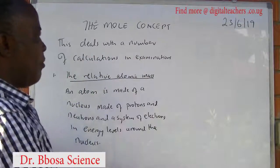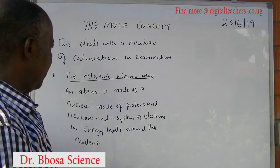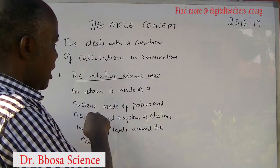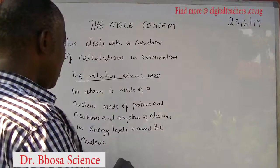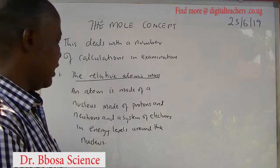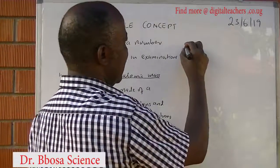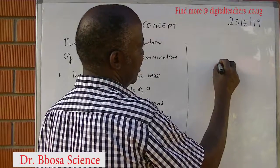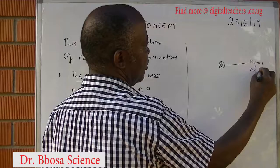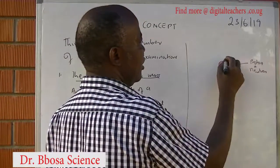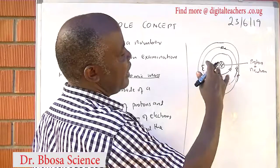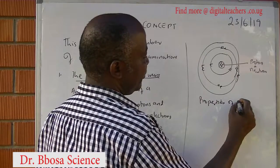Molar concepts deal with the number of calculations in exams. Let us begin with relative atomic mass. An atom is made up of a nucleus consisting of protons and neutrons, and a system of electrons in energy levels. Within the nucleus, we have protons plus neutrons. Around the nucleus, we have a system of energy levels within which electrons are located.